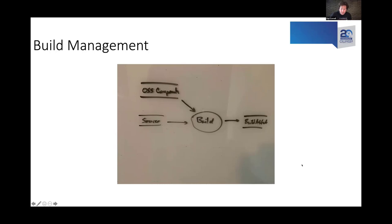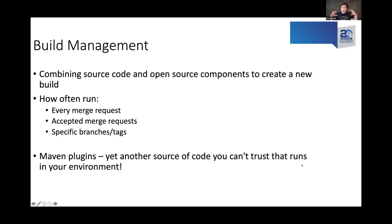Looking at build management systems: you're combining source code with external components to create a new build. How do those get run? Are they run on every merge request, on accepted merge requests only, or on specific branches and tags? It's important to understand how these systems get initiated. When I dug into our own environment, I learned some things I didn't expect — like how GitLab kicks off on certain types of events and Jenkins only weighs in on others. Maven plugins are a total nightmare — another source of code you can't trust, getting pulled from repositories out in the middle of who knows where. All the plugin capabilities in these build management tools make it really challenging to understand what is actually being run.